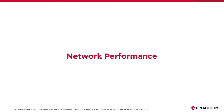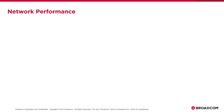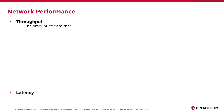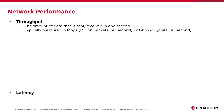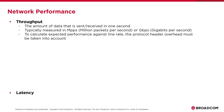To level set here with the metrics typically used with network performance, we typically measure in both throughput and latency. Throughput is the amount of data that's sent and received per second. This can be measured in a couple ways, usually either millions of packets per second or in gigabits per second. To calculate the expected performance against the line rate, one thing to keep in mind is that there is always protocol header overhead. So if you're operating on a 100 gigabit link, you're not going to see 100 gigabits of TCP data traffic.